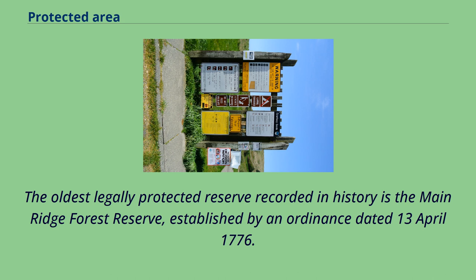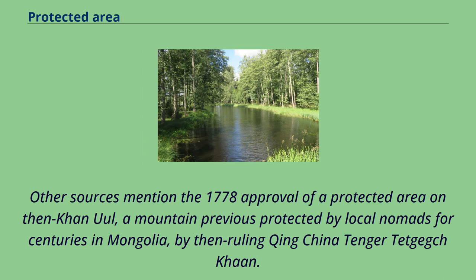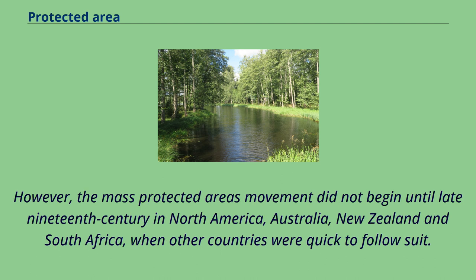The oldest legally protected reserve recorded in history is the Maine Ridge Forest Reserve, established by an ordinance dated April 13, 1776. Other sources mention the 1778 approval of a protected area on then Connell, a mountain previously protected by local nomads for centuries in Mongolia, by then-ruling Qing China. However, the mass protected areas movement did not begin until the late 19th century in North America, Australia, New Zealand, and South Africa, when other countries were quick to follow suit.